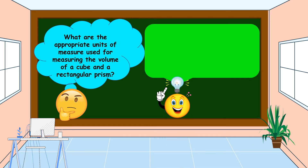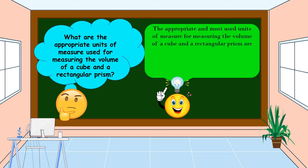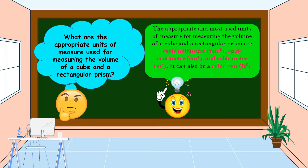A cube and a rectangular prism are solids, so the appropriate and most used units of measure for measuring their volume are cubic millimeter, cubic centimeter, and cubic meter. It can also be a cubic foot and a cubic inch.